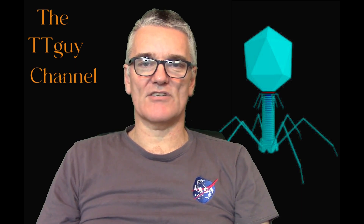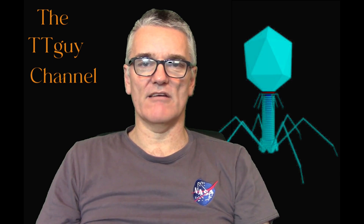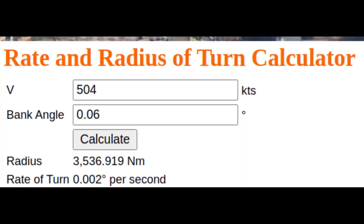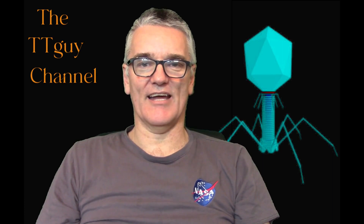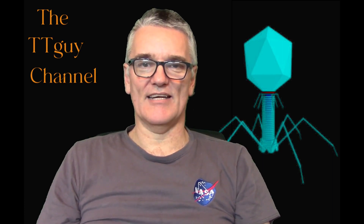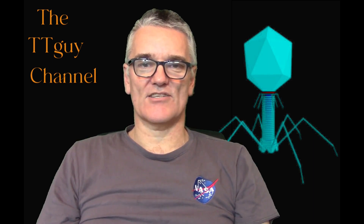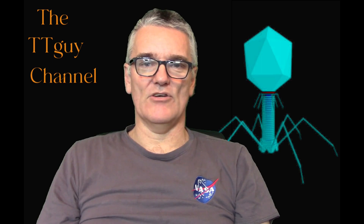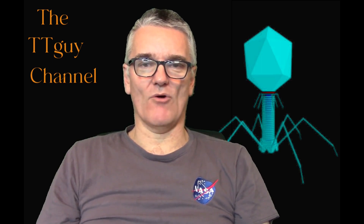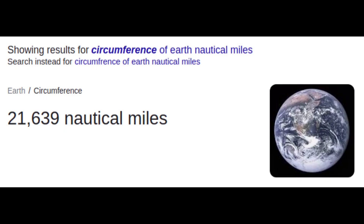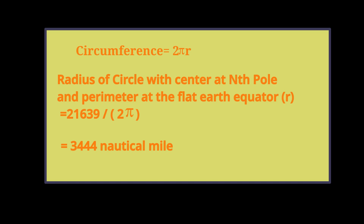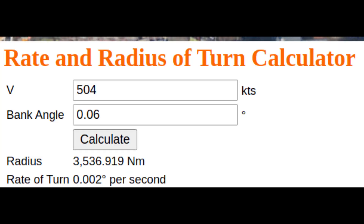I ran it for a 747, which has a cruising speed of 504 knots, and plugged that into the calculator. With a bank angle of 0.06 degrees — a very minute bank angle — that's the bank angle you need to fly a circle with the same circumference as the Earth. So, assuming the flat Earth equator and the globe Earth equator have the same circumference, to fly around the flat Earth equator you would only need a bank angle of 0.06 degrees.